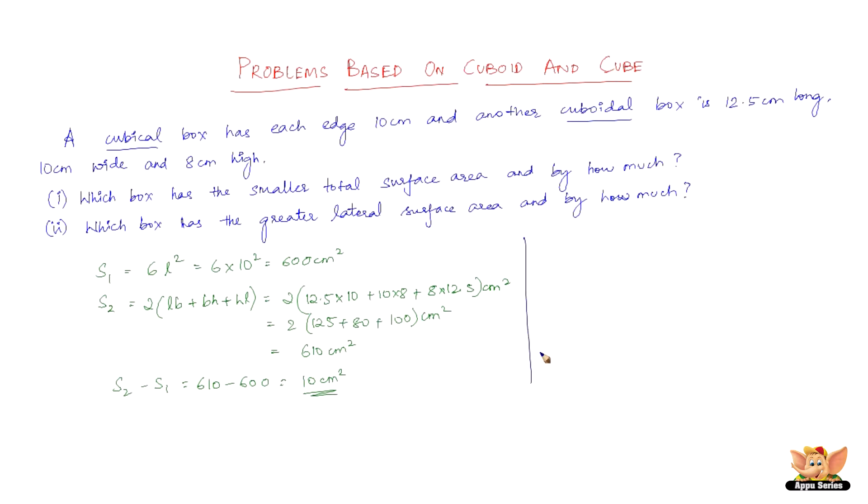Now, let us solve the next one. Which box has a greater lateral surface area and by how much? Let us assume or let us take L1 to be the lateral surface area of the cubical box and L2 to be the lateral surface area of the cuboidal box.